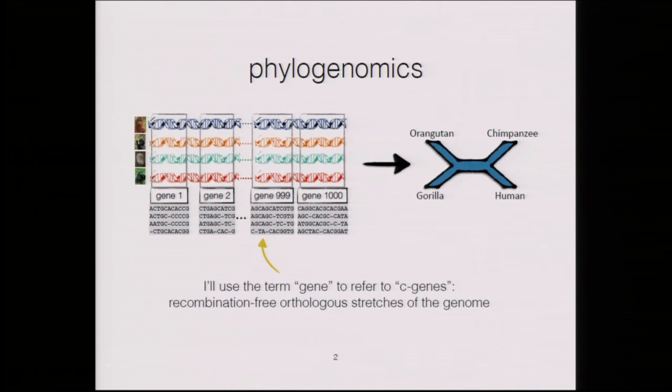There are multiple reasons you need to look at genome-scale data, but one of them is that individual parts of the genome actually have different histories. Therefore, if you look at only a single gene or even just a small number of genes, you may get very strange responses. This is called gene tree discordance, and there are multiple reasons for it.